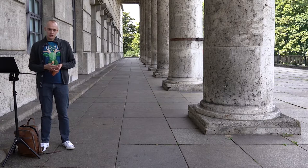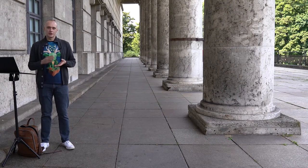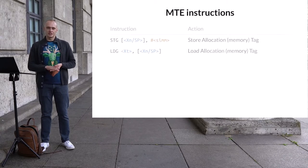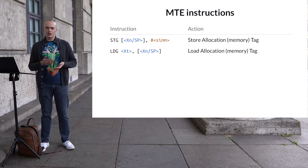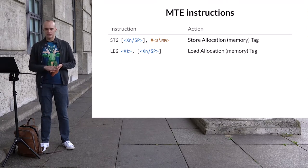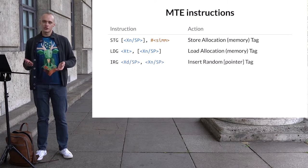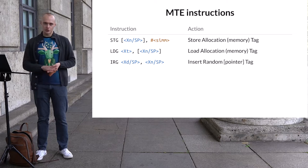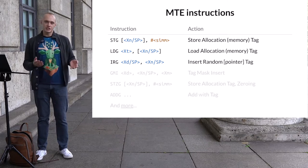If memory tags are stored in an invisible RAM region, how do we change their values? For this, ARM introduced new MTE-specific instructions to manipulate memory tags. There is the STG instruction that allows setting the tag value for an address, and there is the LDG instruction that allows reading the tag value. There are also new instructions related to generating tags — for example, the IRG instruction inserts a random tag into a pointer, using a hardware source of entropy, which makes generated tag values hard to predict. There are 16 new instructions in total.